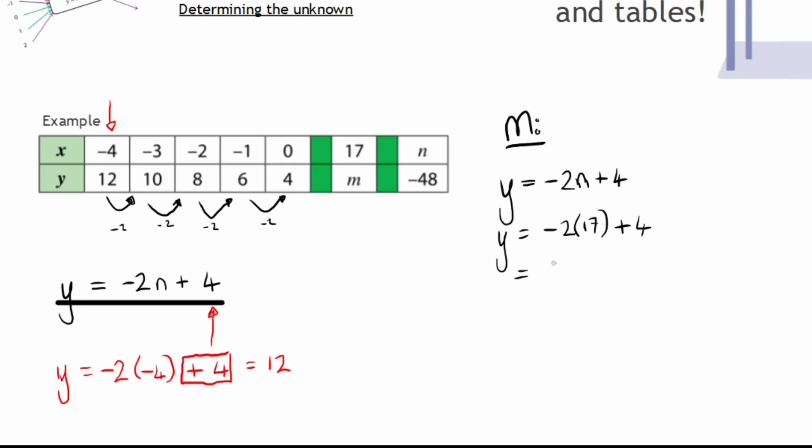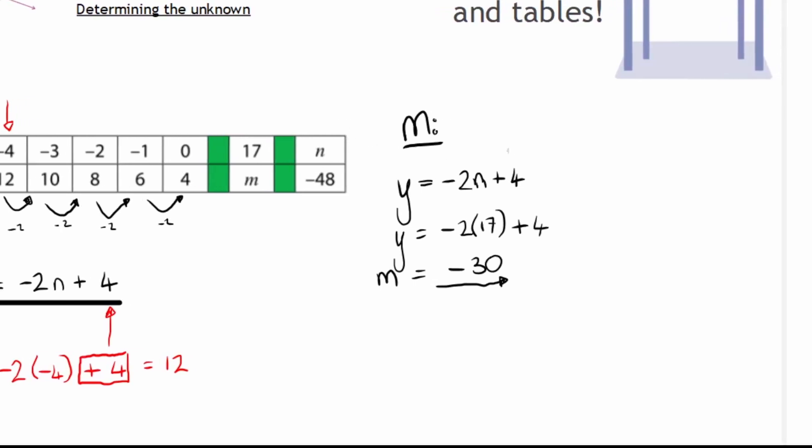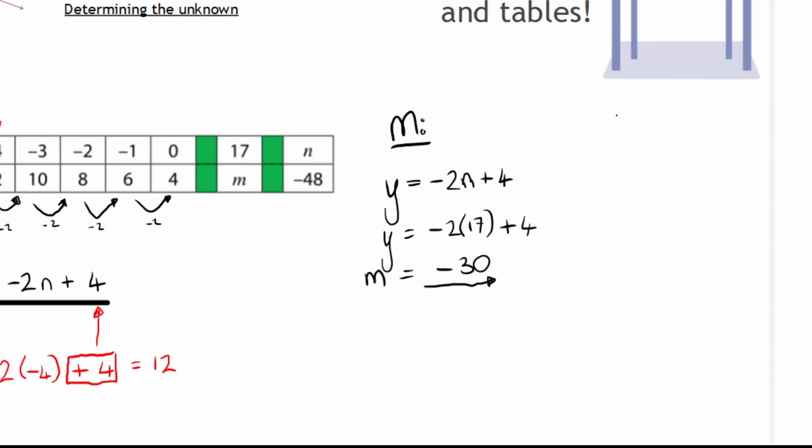Some calculator work should tell you that that would be the same as negative 30, and so that would be my value for m. But now let's have a look at calculating our value for n, that is our input. So how does this change our calculations? Well, let's have a look. Let's use our formula and calculate our value for n. Now the question is, is n an input or an output? That's right, that is an input.